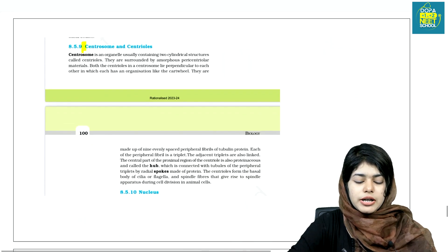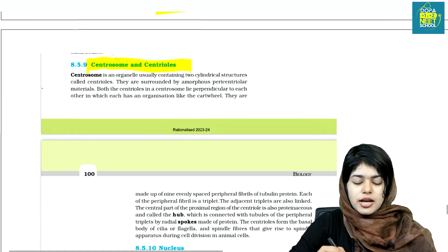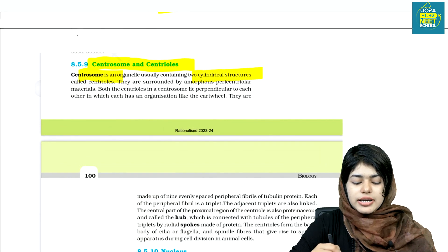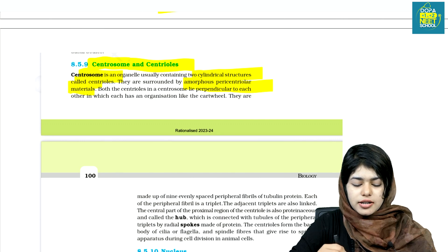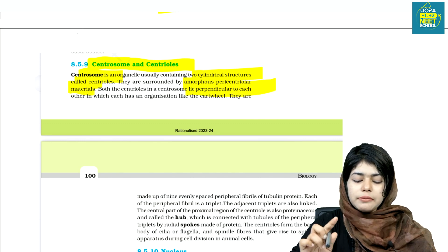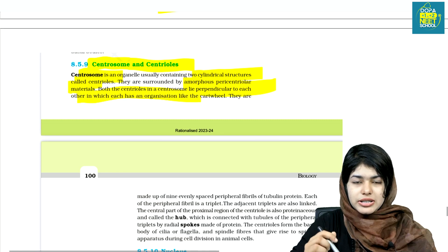There are centrosomes and centrioles. The centrosome has two cylindrical structures called centrioles, which are perpendicular to each other.